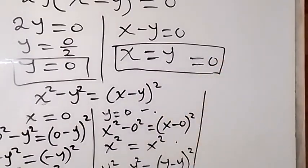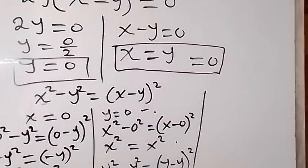So the solution to this problem is x = y = 0, meaning x is 0 and y is 0. Thank you for joining us — don't forget to subscribe to this channel for more videos. See you in the next class!